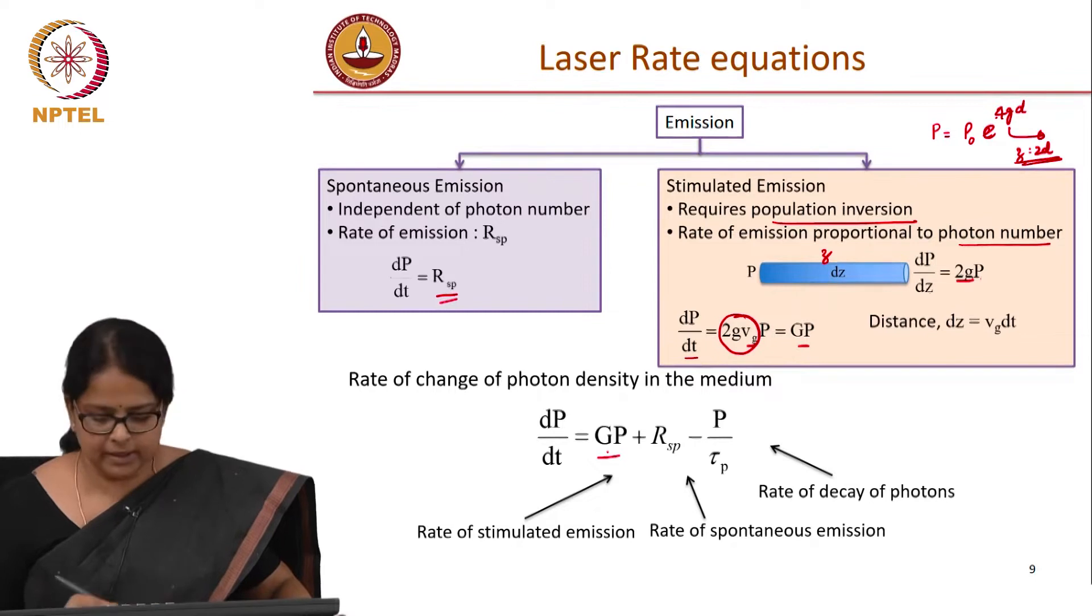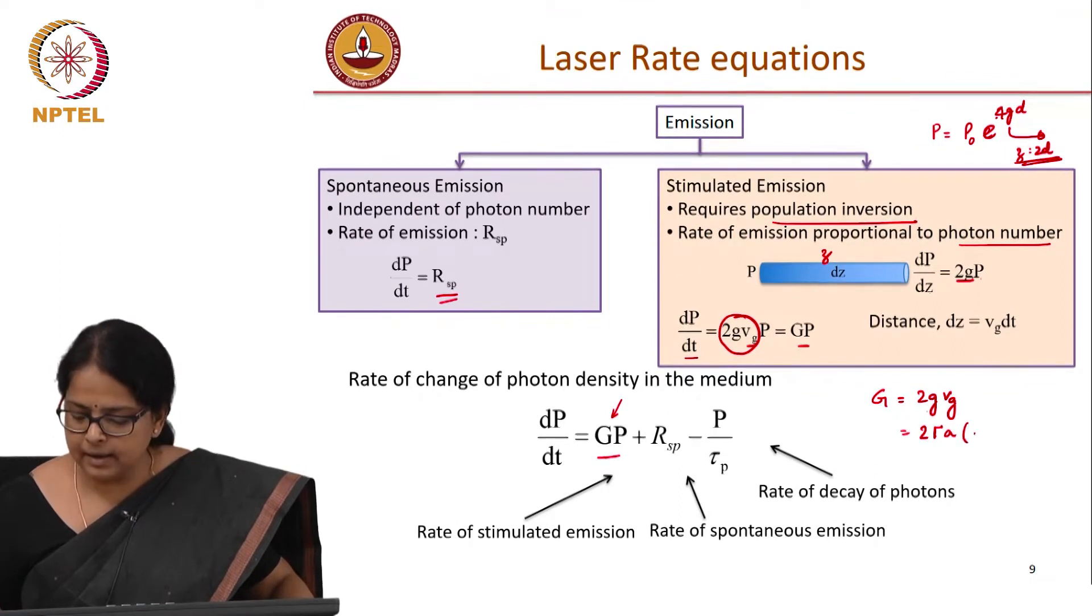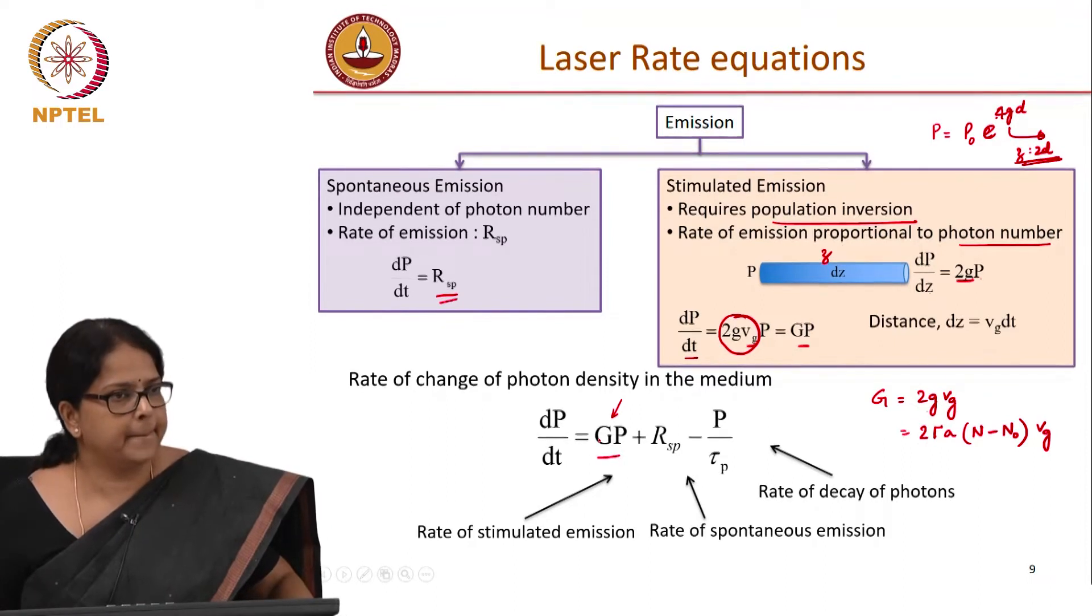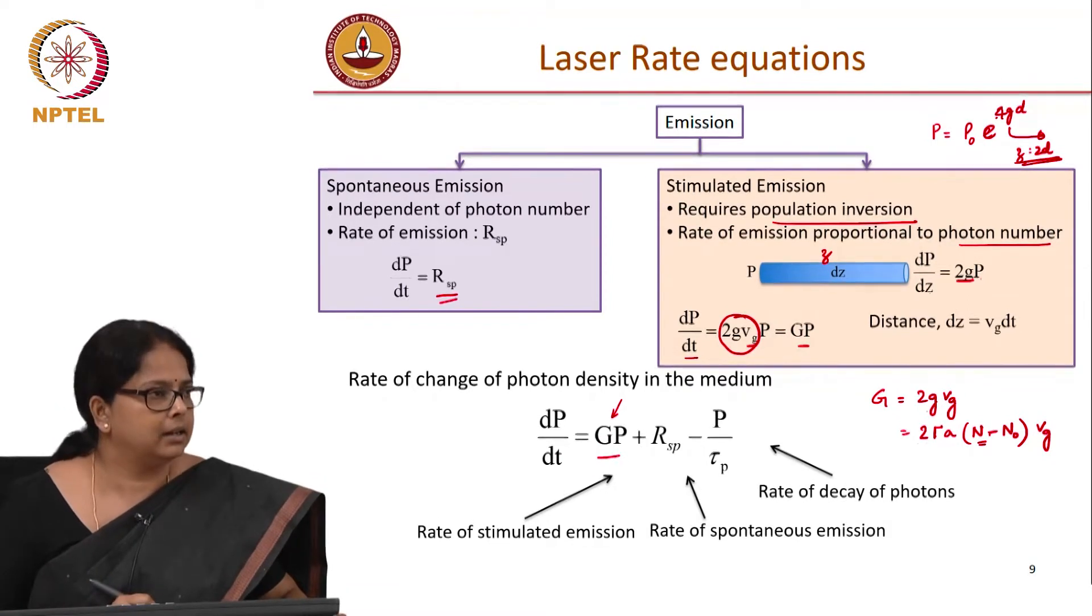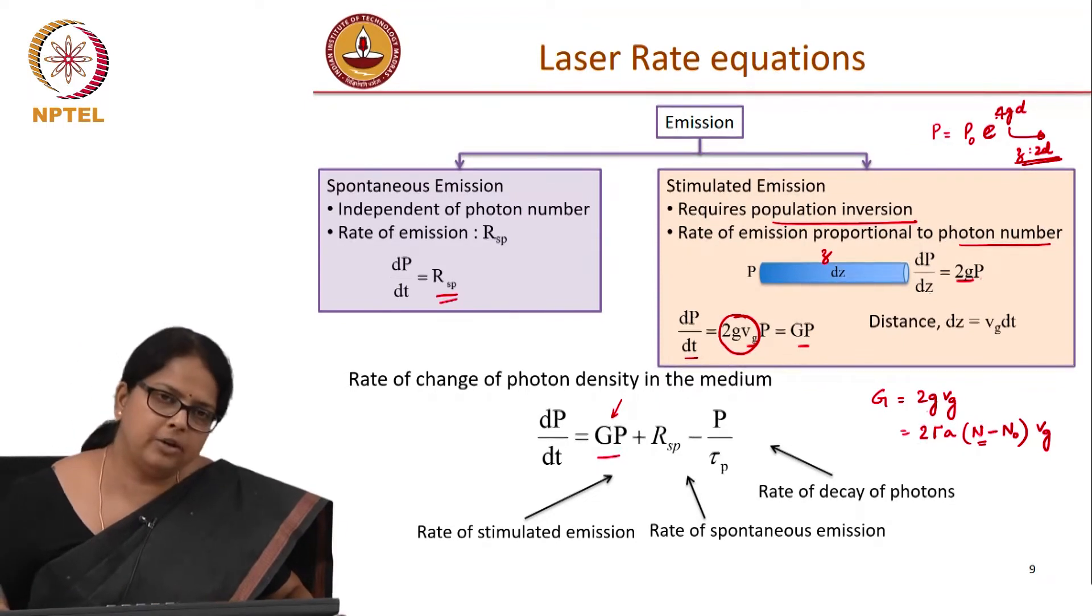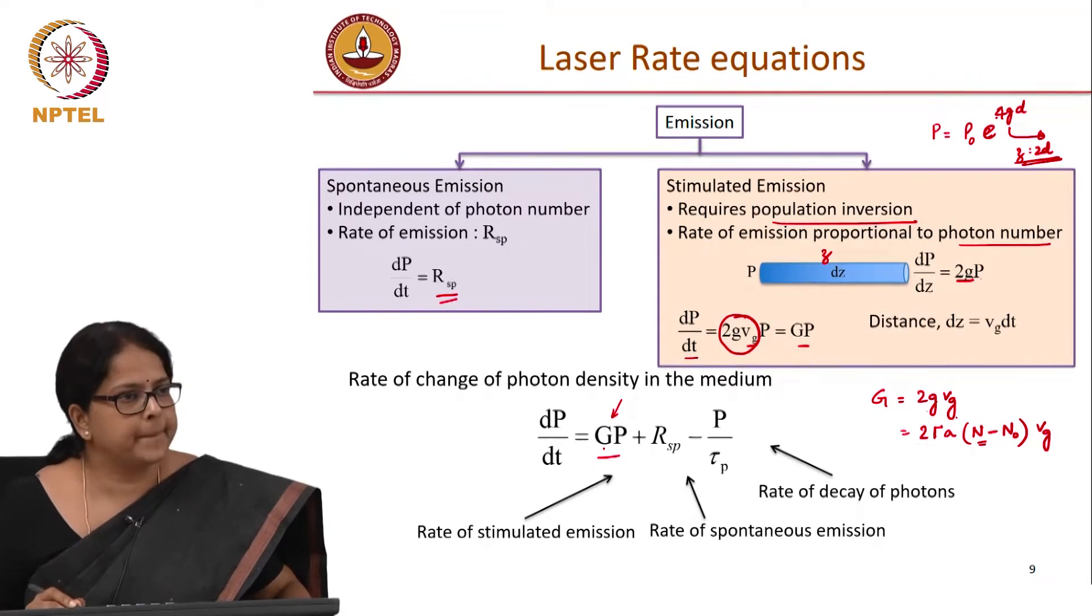One rate equation is done. We just figured out what this factor is and you should remember that this G is 2gVg and this small g is, you had 2 gamma A n minus n naught Vg. I am just avoiding writing all this by writing it as capital G. So you have to understand, the point you have to understand is that dP by dt is dependent on n. Because depending on your carrier density there is a certain population inversion and depending on that you will have a gain coefficient and depending on that you will have this constant G. It is not an equation with only one variable, there are 2 variables in the system.